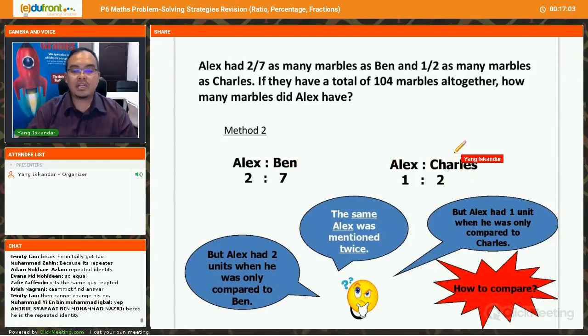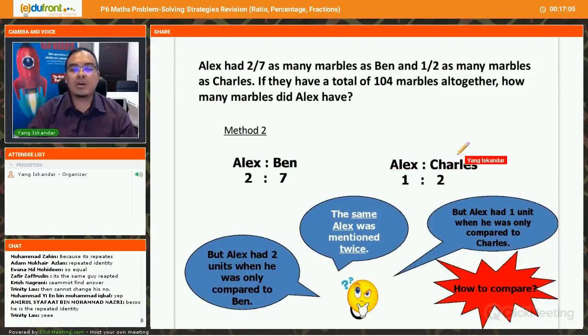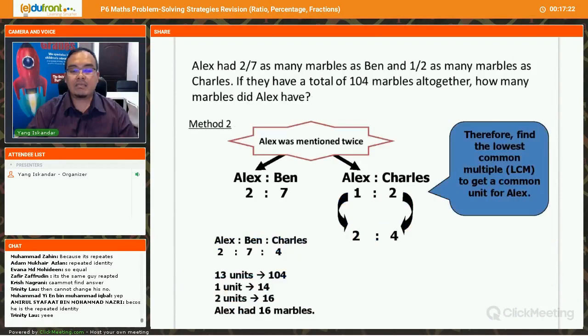Now, Alex and Ben, this first ratio and the second ratio, they are not related at first. So we want to see how these two ratios can be put together and we can relate them together. How we want to do that? Since Alex is repeated for both ratios, we make Alex the same. So Alex was mentioned twice. So what do we do now? We make Alex the same.